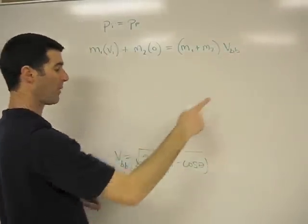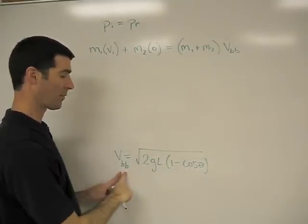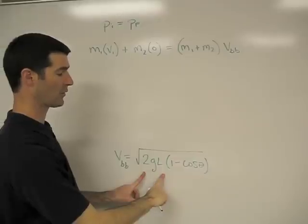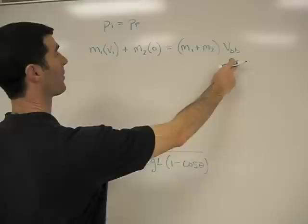So as they combine, we found that as they start to swing up the pendulum, they have a combined velocity of this square root of 2gL, 1 minus cos theta. So we can substitute that in up here.